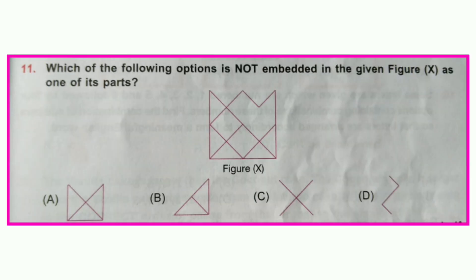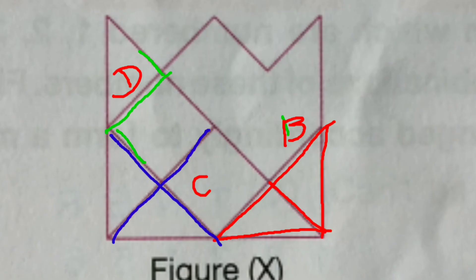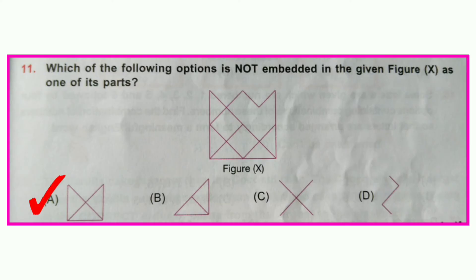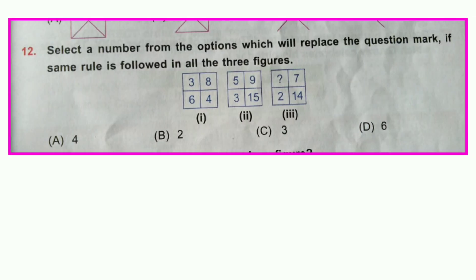Question number eleven: Which of the following options is not embedded in the given figure X as one of its parts? Options B, C, and D can be embedded accordingly, but A cannot be embedded. So option A is correct.